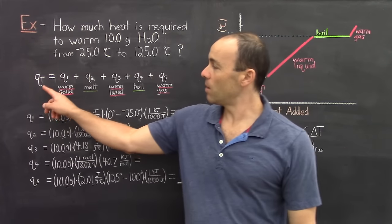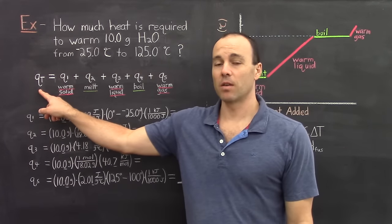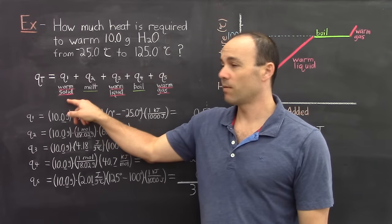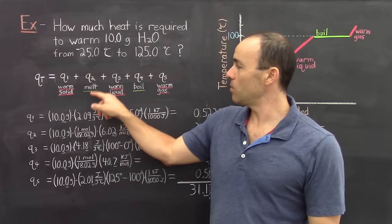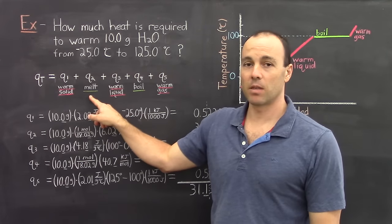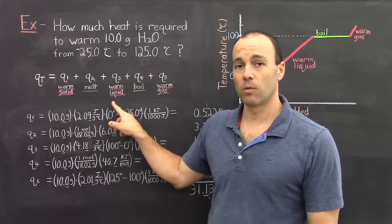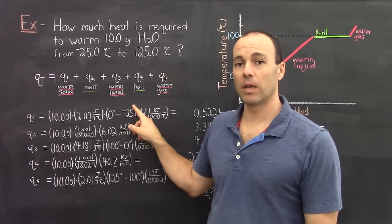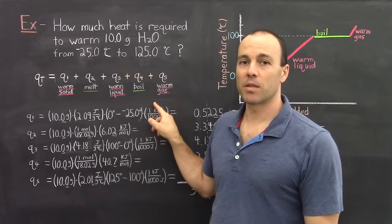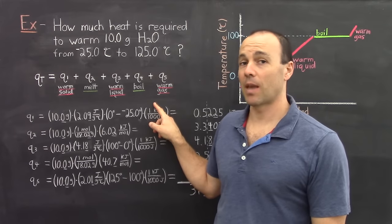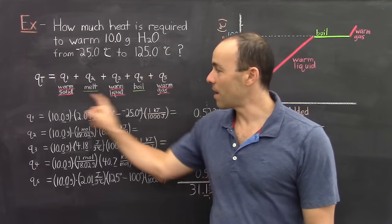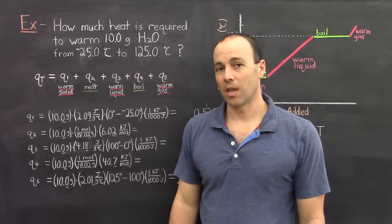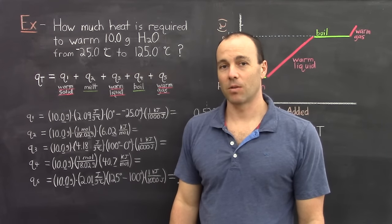So the total amount of energy equals Q1 for warming the solid, plus Q2 for melting, plus Q3 for warming the liquid, plus Q4 for boiling, and then plus Q5 for warming the gas. You add these energies together and you get the total energy.